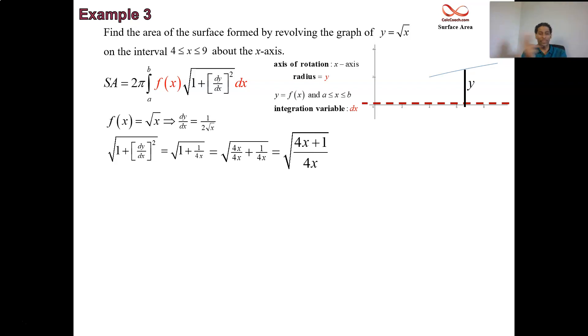Then combine the numerators. Put it into 1 fraction, now you have a common denominator, and you can take the square root of the top and the square root of the bottom. The square root of 4x is 2 times the square root of x. So all of this is going to be your replacement to the radical.